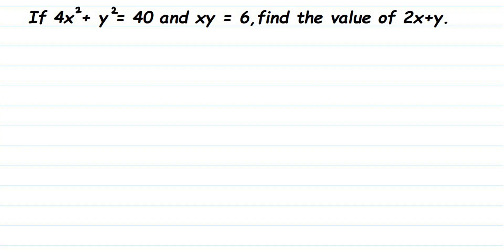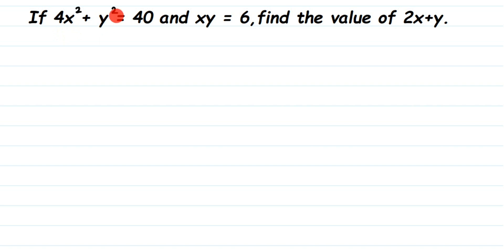Here is the question: if 4x² + y² = 40 and xy = 6, find the value of 2x + y. We have 4x² + y² given, so x has a power of 2 and y has a power of 2, but the answer we have to find — 2x + y — has no power.